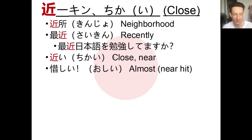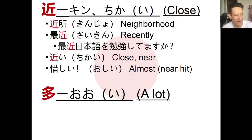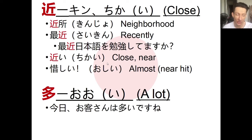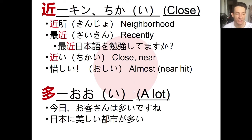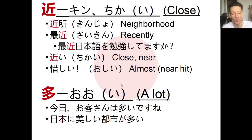Don't confuse chikai with the English word 'close' as in almost. In Japanese, that's ā, shii — like when playing darts and you just miss the bullseye. Moving on, we also have ooi, the i-adjective meaning a lot or a great number. For example: kyō o-kyakusan wa ooi desu ne — there are many customers today. Or: nihon ni utsukushii machi ga ooi — there are many beautiful towns in Japan. Both ooi and chikai are very useful for everyday Japanese.